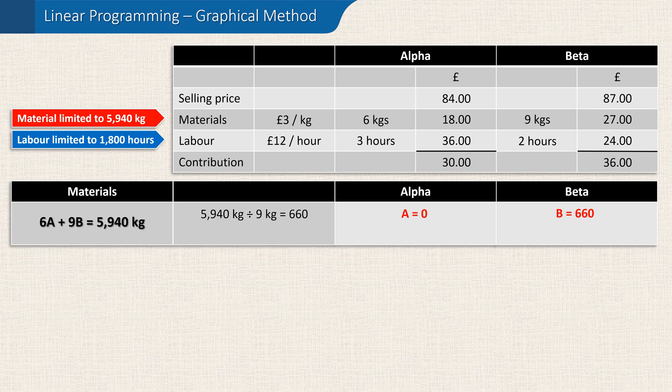At the other extreme, let's suppose we chose not to make any betas — that is, B equals zero. Each alpha requires 6 kilograms of material, and 5,940 divided by 6 is 990, meaning we could produce 990 alphas if we chose to make no betas.